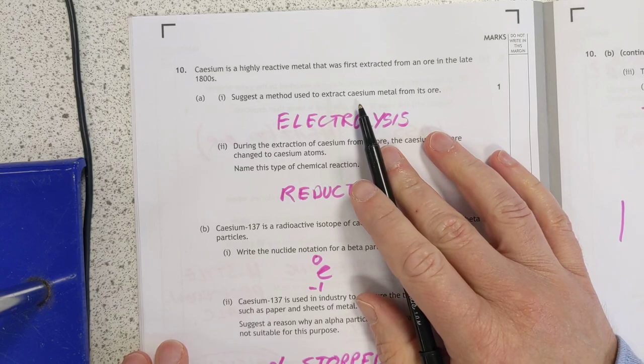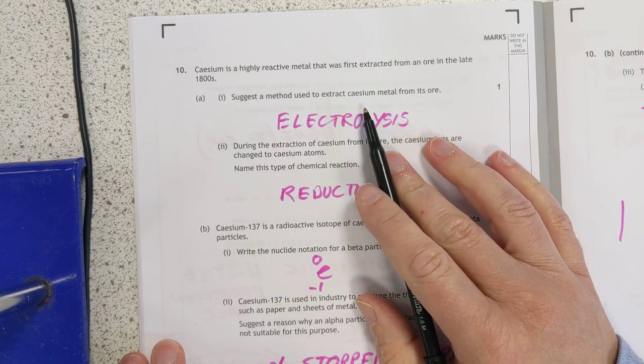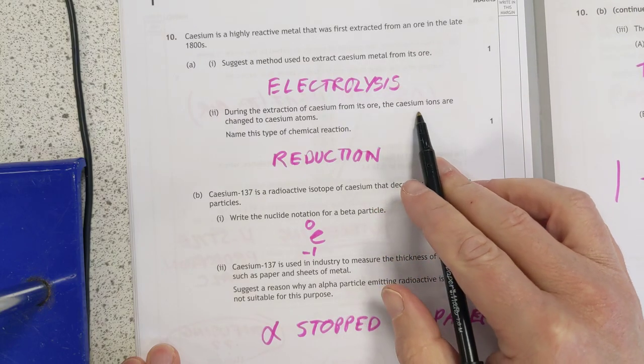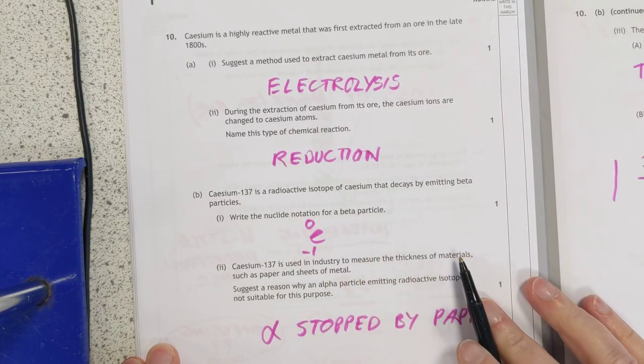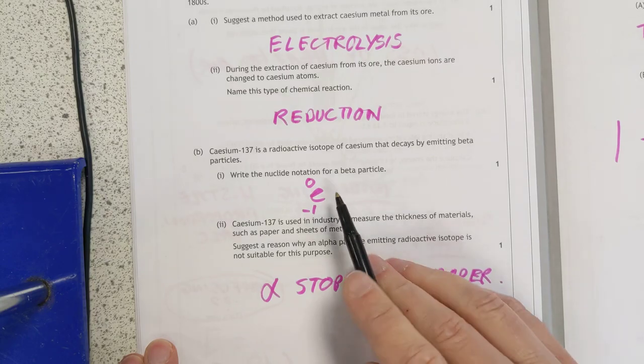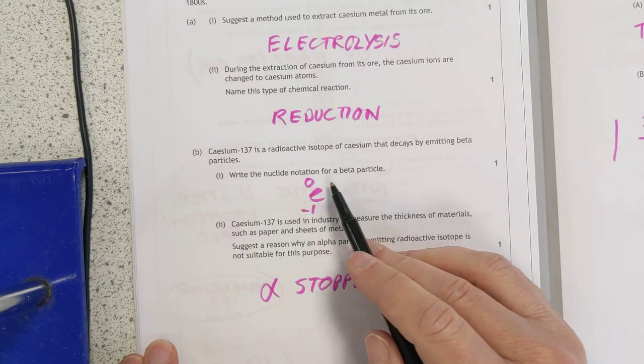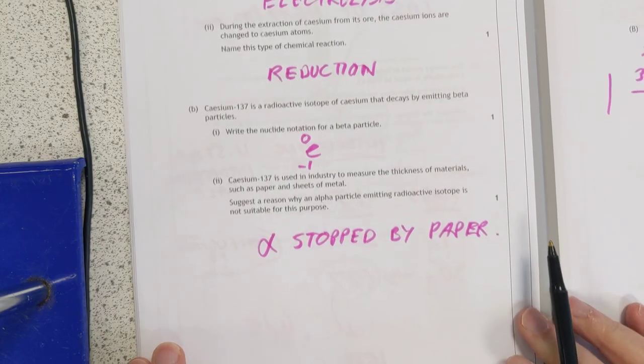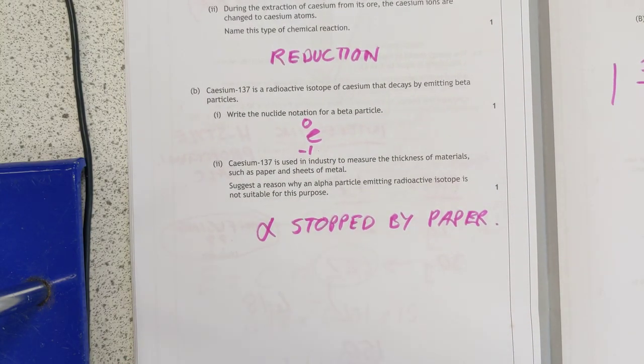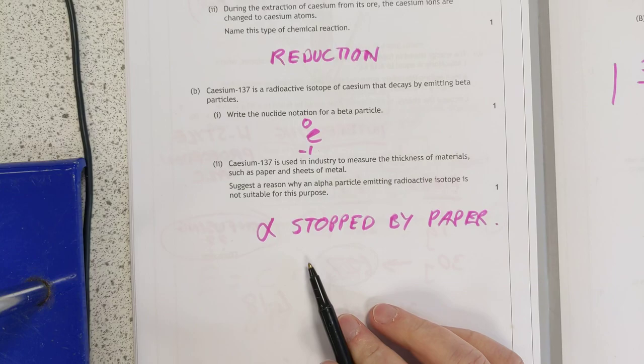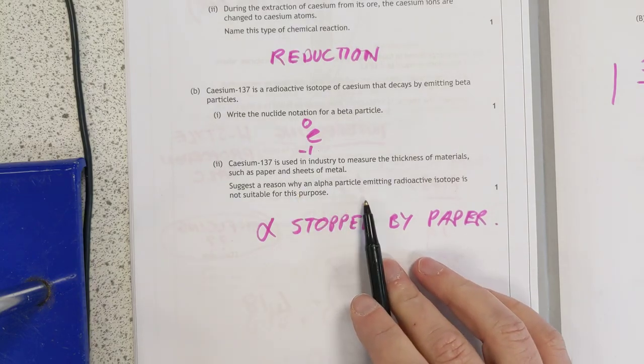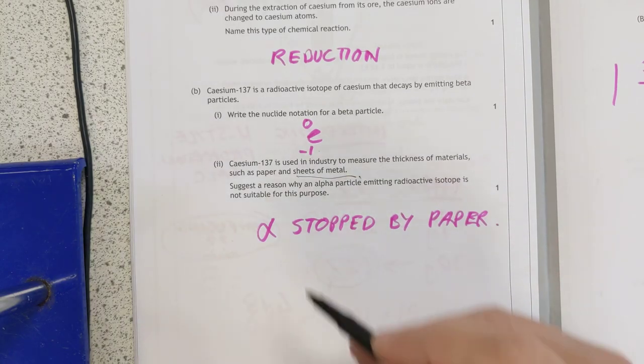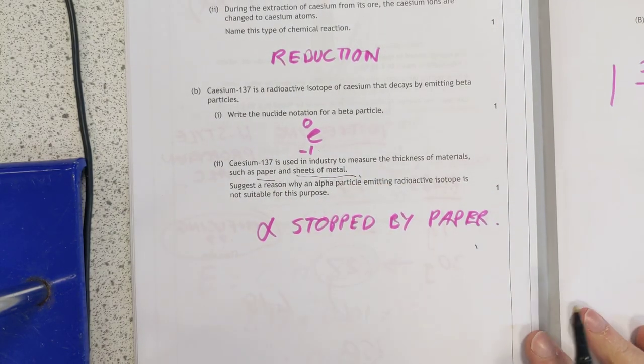CZ metal is bonkers. It's way up the top of the electrochemical series. The only way to get it is electrolysis. If you're turning positive ions into neutral atoms, that's a reduction. Because the ions are gaining electrons. The beta particle. It's the one with its weird numbers. It's zero on the top. Negative one on the bottom of nucleoid notation. Alpha. Well, I can't use alpha radiation. Because alpha, you can't get alpha measuring sheets of metal. That's for sure. Couldn't even get it measuring sheets of paper. Stop by paper.